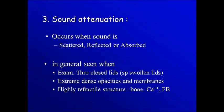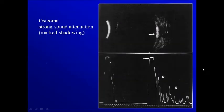The third point is sound attenuation. Sound attenuation occurs when sound is scattered, reflected, or absorbed. We can see sound attenuation if we examine the globe through closed lids, especially if the lids are thick, or if there are extremely dense opacities, membranes, or highly reflective structures like bone, calcification, or foreign body. In this example, this is an osteoma with marked attenuation of the sound, so the area posterior to it appears dark.